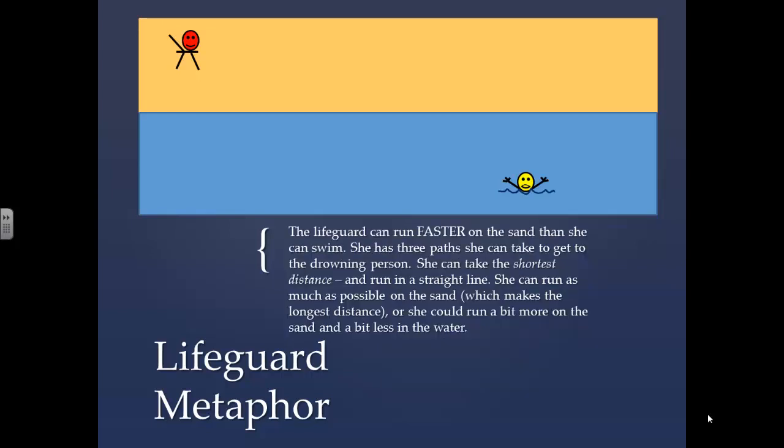The lifeguard can run faster on the sand than she can swim. She has three paths she can take to get to the drowning person. She can take the shortest distance and run in a straight line.